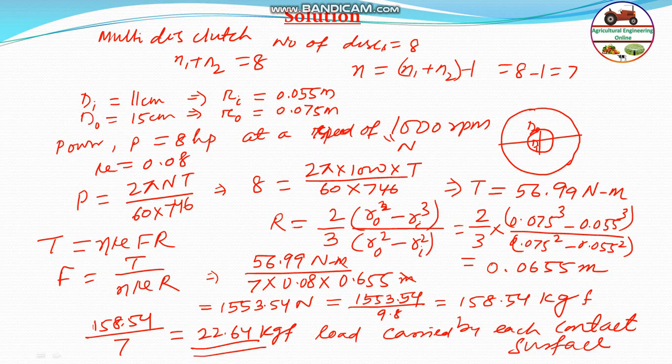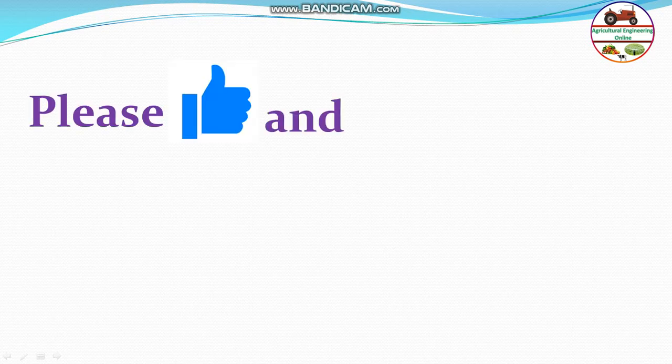This is the answer: 22.64 kgf per contact surface. Note: if using the mean radius formula R = (Rᵢ + Rₒ)/2, there will be a slight change in the result. Hope you understand. Please like and subscribe to my channel.